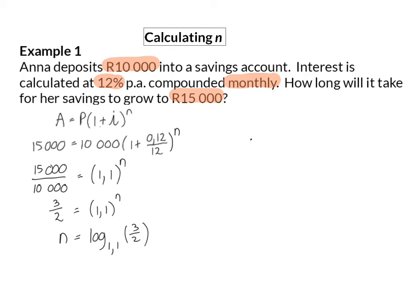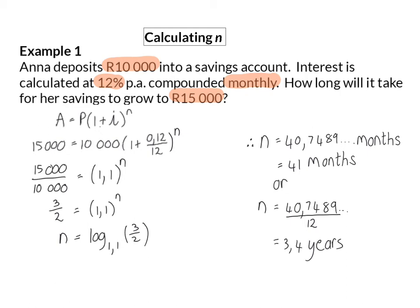This value can then be determined on your calculator, and you will find that n is then equal to 40.7489. This value will always have to be in the same period as the compounding period of the interest rate, and that means that that will be 40.74 months. So our final answer here can be that after 41 months, her final value would have grown to 15,000 rand. Or the question can maybe be specified to give the answer in years, and then we'll have to continue dividing by 12 and end with 3.4 years.